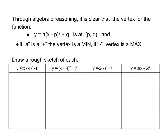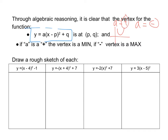Let's summarize. In the vertex form y equals a times (x minus p) squared plus q, the vertex is always at (p, q) — notice there's a minus p in there. If a is a positive number, the vertex is a minimum. If the a value is negative, the vertex is a maximum. With a positive, we get a smiling parabola opening upward; with a negative, we get a frowning parabola opening downward.